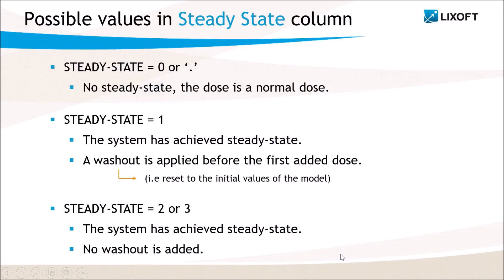To summarize, the possible values that can be given in the column steady state are 0 for no additional dose, 1 for additional doses with washout before the first added doses, and 2 or 3 for additional doses without washout.